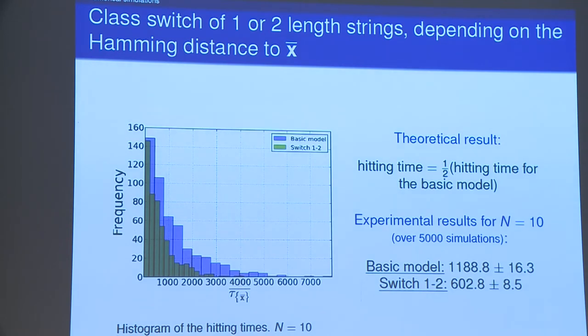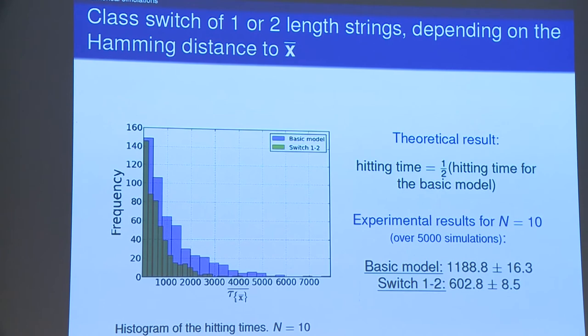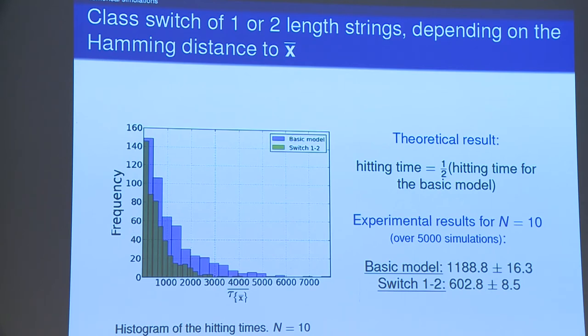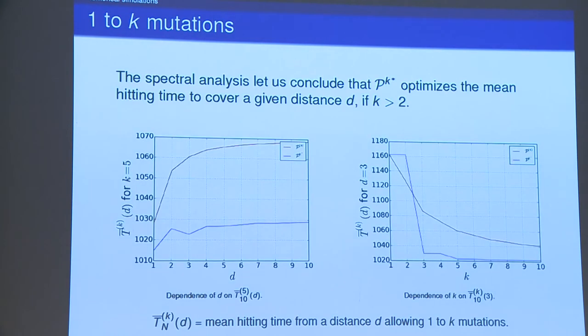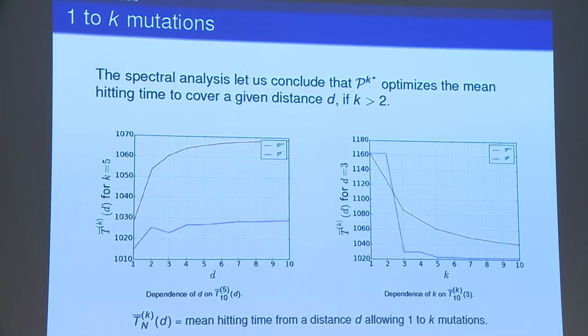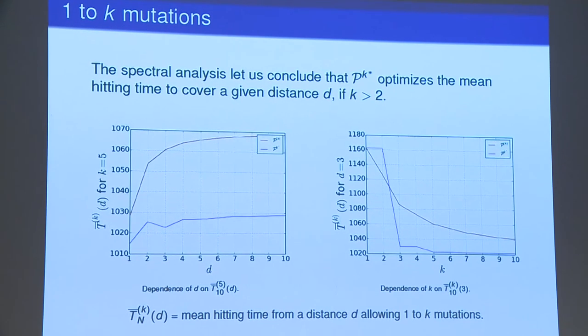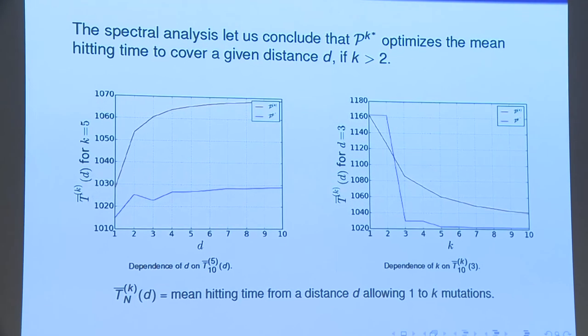In this first simulation I compare the hitting time for the simple point mutation model and for the model of switch of one or two length strings depending on the affinity. As demonstrated by mathematical analysis for N big enough, we obtained the hitting time for this second model is half compared to the basic mutational model. And here I give the results we obtained for N equal to 10 over 5000 simulations. So N is not so big actually. And in these last simulations I compare the hitting time to cover an initial Hamming distance d for the two models I introduced of multiple point mutations. We can demonstrate by spectral analysis that the model represented by P power k star actually optimizes this hitting time for k strictly greater than 2.